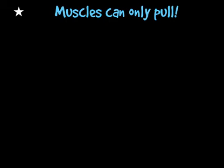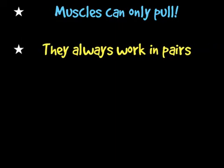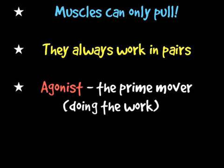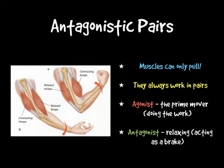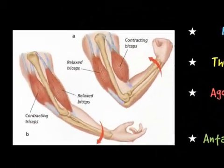Muscles don't just work automatically — they work in pairs. Key points to note: muscles can only pull, they don't push, and they always work in pairs. You have what's called an agonist, which is the prime mover — the muscle that's doing the pulling and doing the work. The opposite of an agonist is an antagonist — that is a muscle that relaxes, doesn't do much work, and basically acts as a brake. For example, consider the biceps brachii and the triceps brachii.